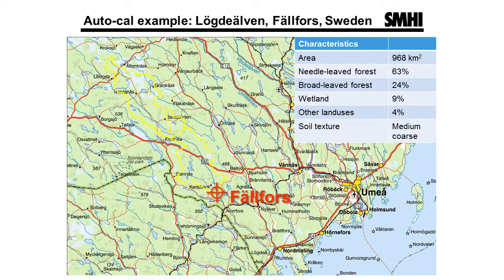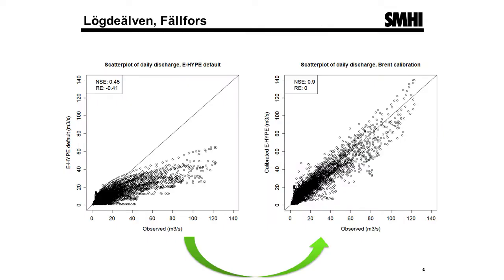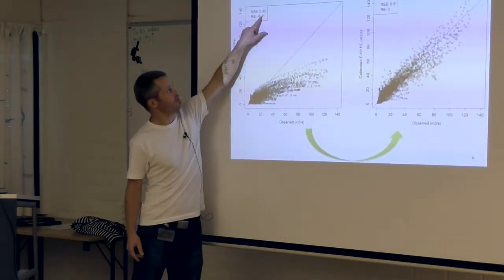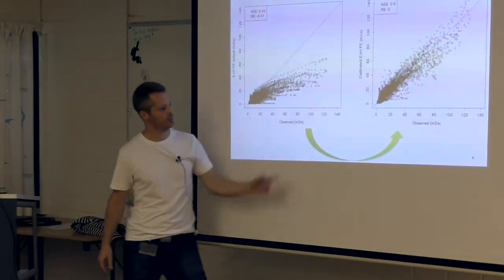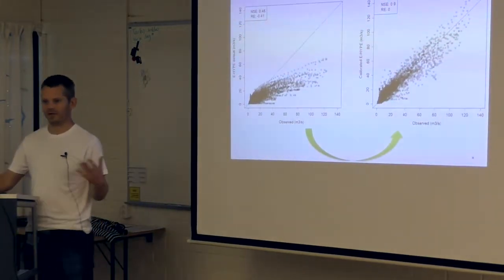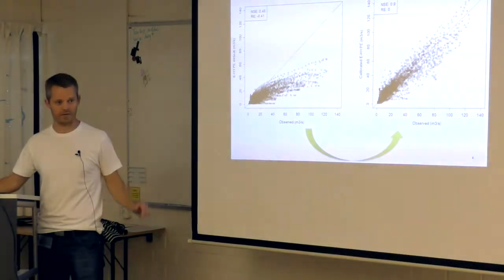An example of what can happen: using a Swedish case at Fellfors station, which has a lot of needleleaf forest and medium coarse texture. In the original European setup, plotting observed versus simulated daily discharge gave an RE value of minus 0.04, meaning 4% underprediction, and an NSE of 0.45. After applying the algorithm and letting it run, you get a much better result. It's a pure mathematical way of finding numbers — it doesn't always work, but in this case it did.